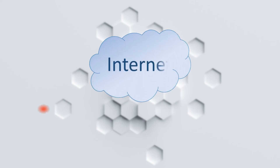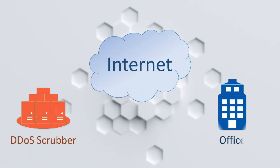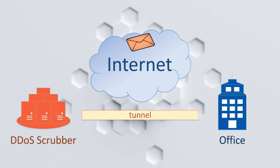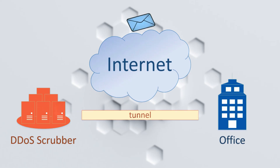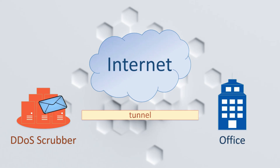Lastly, we have an unusual case. You may use GRE with a DDoS scrubbing provider. You sign up with a provider and build a GRE tunnel with them. All your incoming internet traffic goes to them first — they remove anything malicious and send the rest to you over the GRE tunnel.